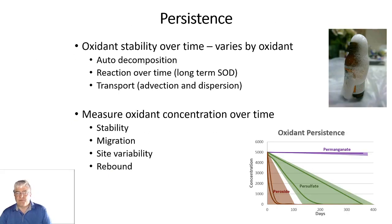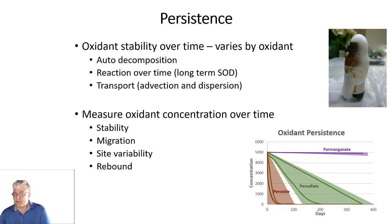Another topic to consider is persistence — oxidant stability over time — which varies by oxidant. We talked previously about auto-decomposition, reaction over time, reactive tracer components, and transport. The oxidant concentration will both change and decrease over time as a function of decomposition. You measure this by tracking oxidant concentration over time across a series of locations — looking at oxidant stability, migration, site variability, and whether the site is behaving as expected. You're also looking at rebound: if you inject an oxidant and it's fully consumed while contaminant is still desorbing from soil, you can get an increase in concentrations even in the presence of only trace amounts of available oxidant.